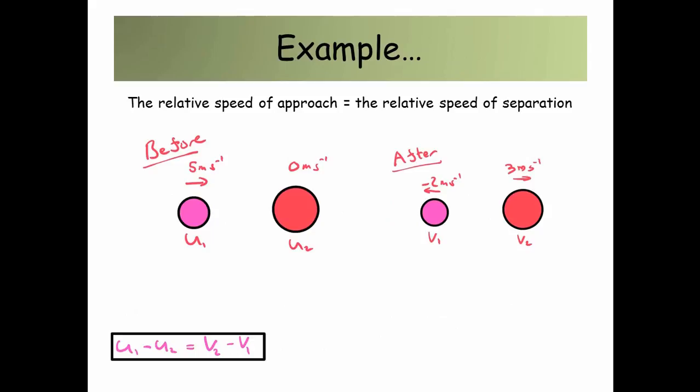Okay, so here's an example. We've got a ball, the pink-colored ball U1 that's traveling at 5 meters per second, and U2 is just stationary. After these balls collide, V1, the final velocity of the pink ball, is now going backwards at minus 2 meters per second, and then the red ball is going off with 3 meters per second. I've set this up so this is going to be true, but I just want to show you the process. This is going to be an elastic collision.